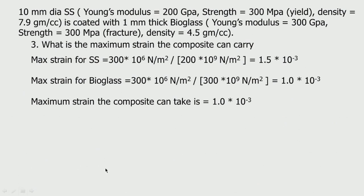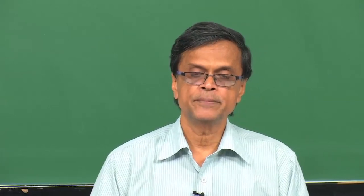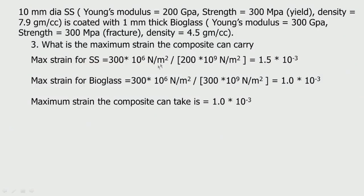So the maximum strain the composite can take is 1 × 10⁻³. We calculate strain = stress / modulus, apply the same stress to both, and get different strains. We always have to take the lower of the two strain values because it is a composite — once it reaches that value, the composite material will start failing.